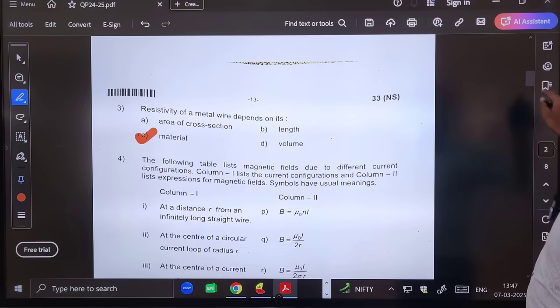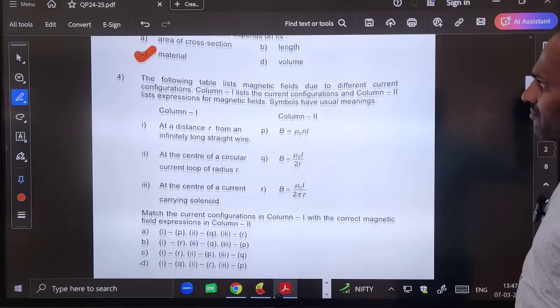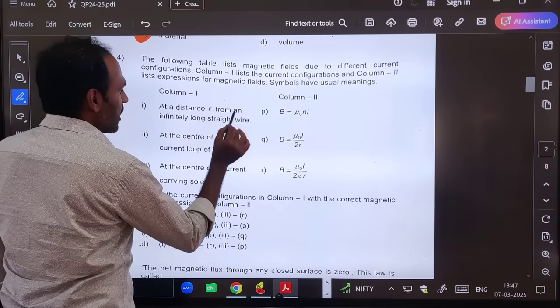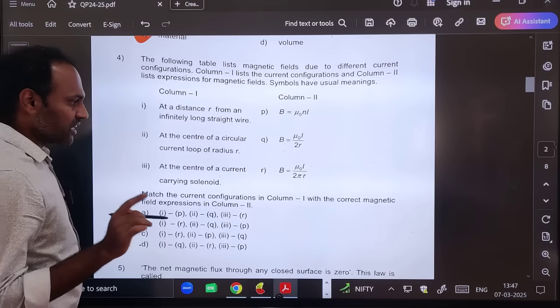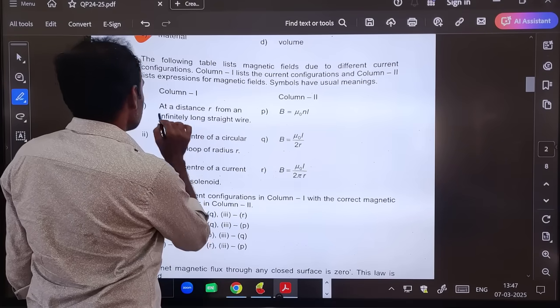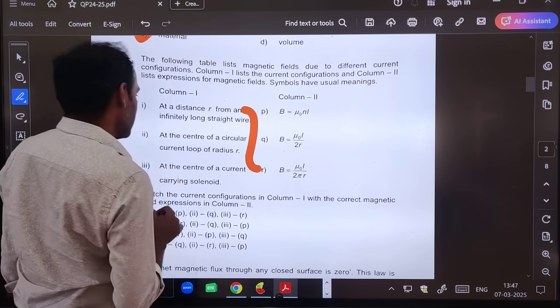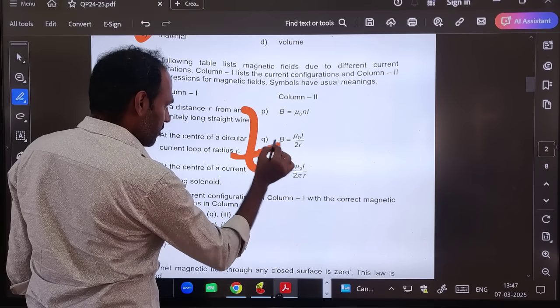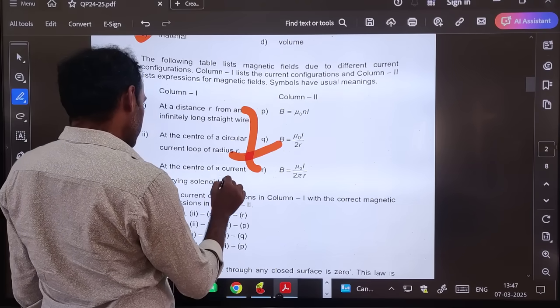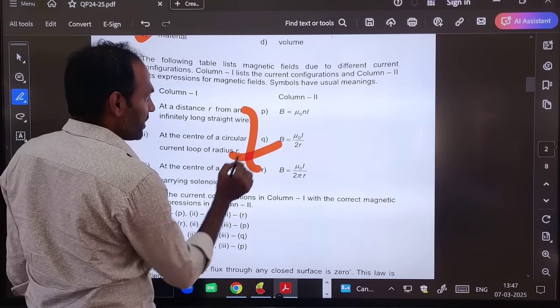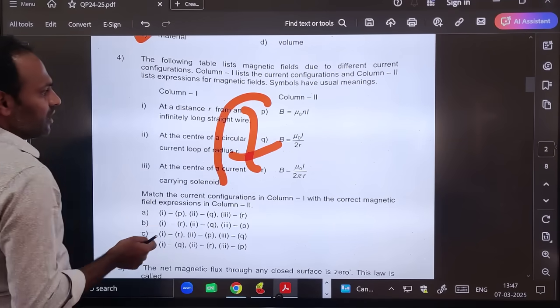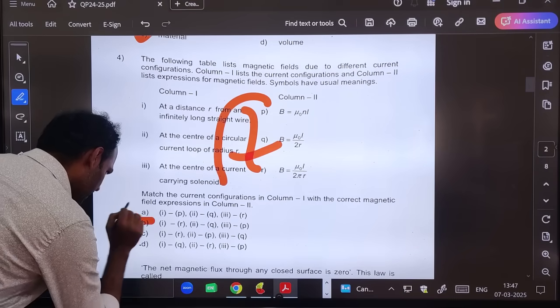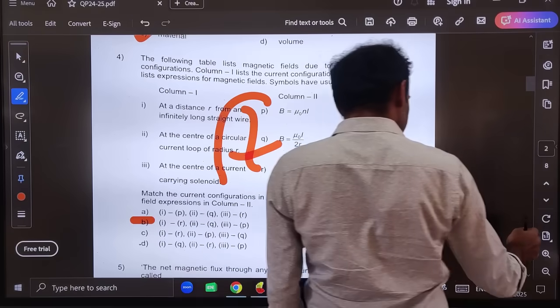Fourth question, the following table. Let us see the table correctly. So here we have to match the things. In first column we are having at a distance R from an infinitely long straight wire, the magnetic field is μ₀I/2πR. So first one is R. And second one at the center of circular current loop is μ₀I/2R. And third one at the center of current carrying solenoid is μ₀NI. So it will be option B, it means RQP. Option B is correct, fourth question.